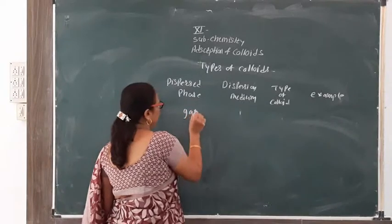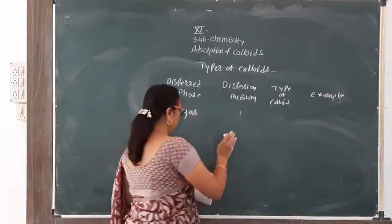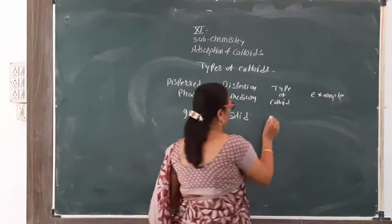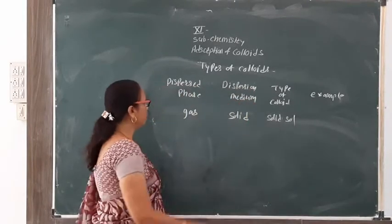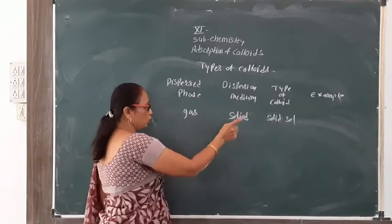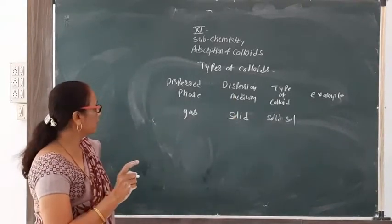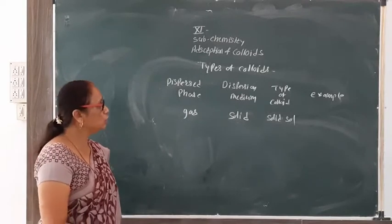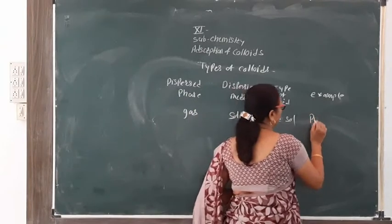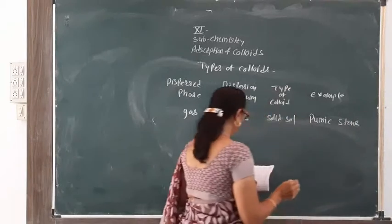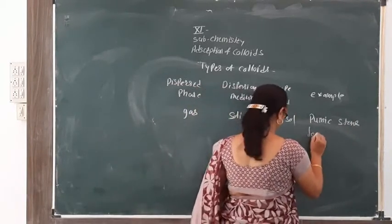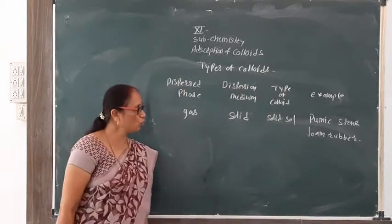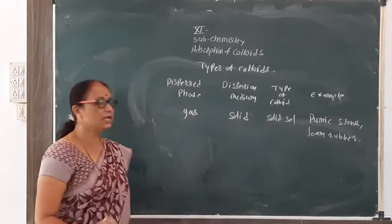When the dispersed phase is gas and the dispersion medium is solid, this colloidal solution is also called a solid sol. When the dispersed phase is gas and the dispersion medium is solid, examples include pumice stone, foam rubber, and plaster. These are examples of solid sol — that is, the gas-in-solid type.